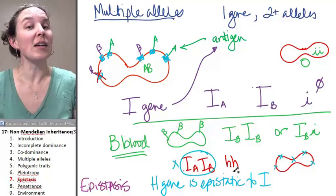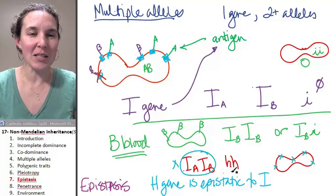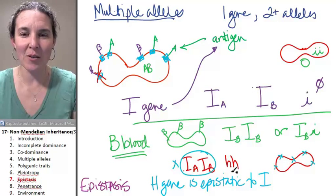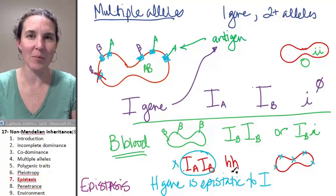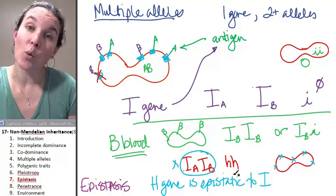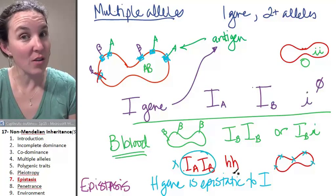This is why you never say, my mom isn't my mom, because she has type whatever blood, my blood can't be possible. It's not possible because maybe you have a wacky, wonky, wookie H gene, which is epistatic to the I gene.